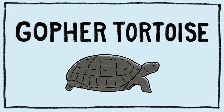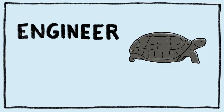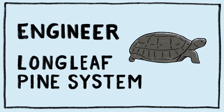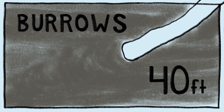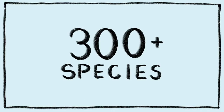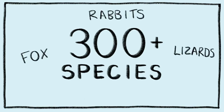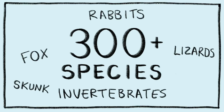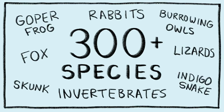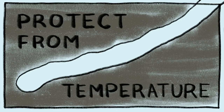Our last keystone species for today is the gopher tortoise, an Oxbow Meadows favorite. These animals are examples of ecosystem engineers in our longleaf pine forest ecosystems. These ecosystem engineers change their environment by creating burrows. Their burrows are up to 40 feet long and house over 300 different species of animals, including fox, rabbits, lizards, invertebrates, skunks, burrowing owls, gopher frogs, and even indigo snakes. In their burrows, they protect them from high and extreme temperatures.